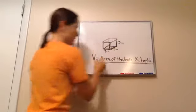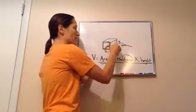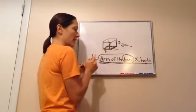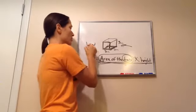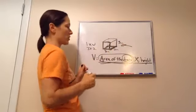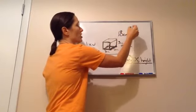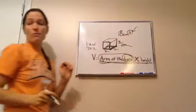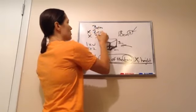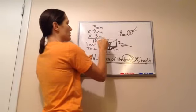Volume equals the area of the base times the height — you need to know this. So if we have three centimeters times two centimeters times three centimeters: three times two is six, six times three is 18 centimeters cubed. It's very important that you remember to write 'cubed' because you're multiplying centimeters × centimeters × centimeters, which equals centimeters cubed.